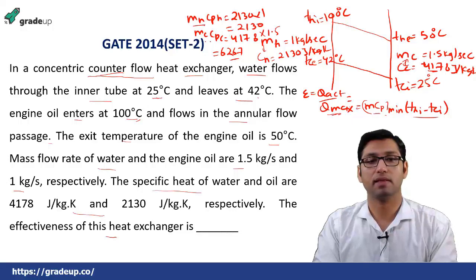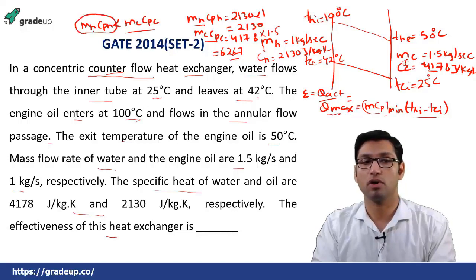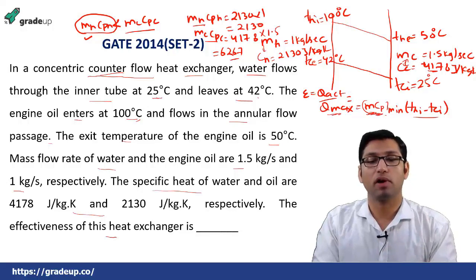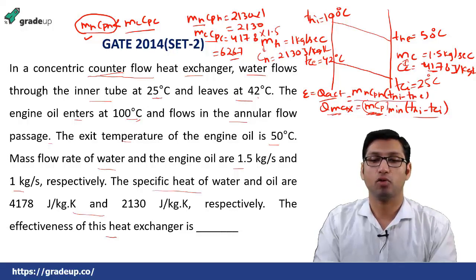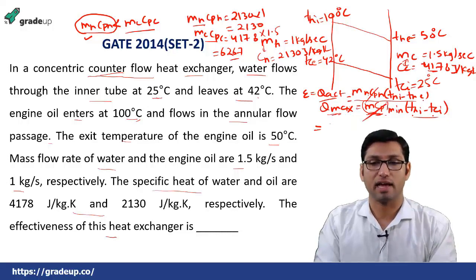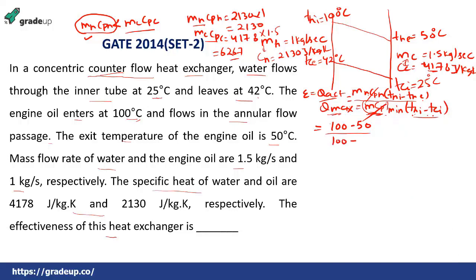Since m_H × Cp_H = 2130 is less than m_C × Cp_C = 6267, the minimum value is m_H × Cp_H. So Q_max = m_H × Cp_H × (T_hi − T_ci). The effectiveness ε = (T_hi − T_he) / (T_hi − T_ci) = (100 − 50) / (100 − 25) = 50/75 = 0.666. So the effectiveness of the heat exchanger is 0.66.